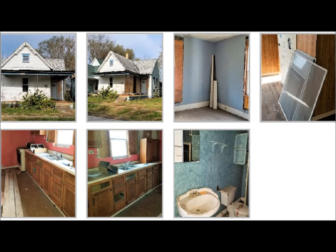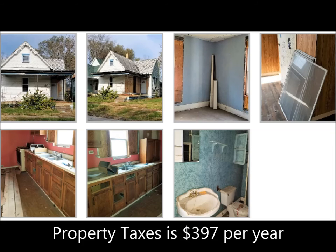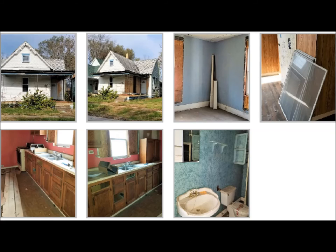This is a fixer-upper, as we can see. It looks like it may need some windows, and in the kitchen the boards are showing on the floor. There are some drawers missing there, it looks like. But you can also see that the property taxes are only $3.97 per year.